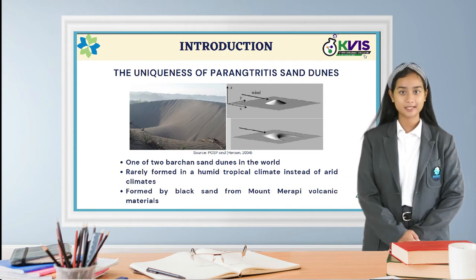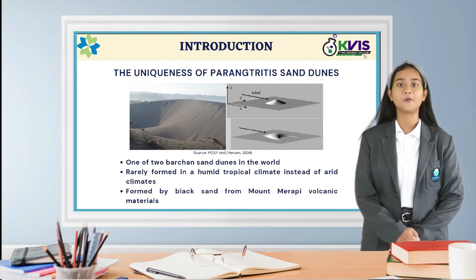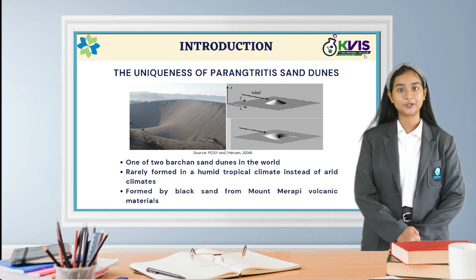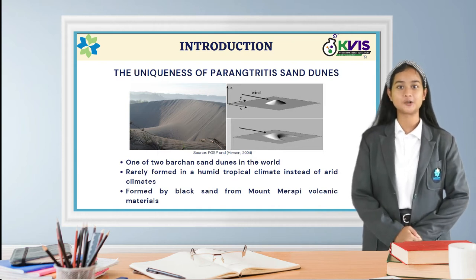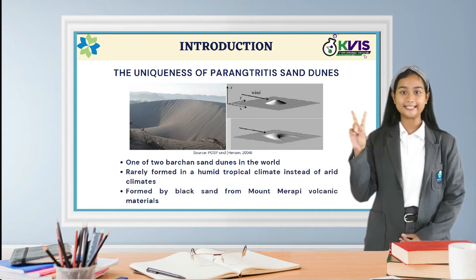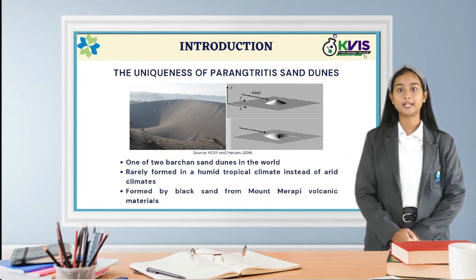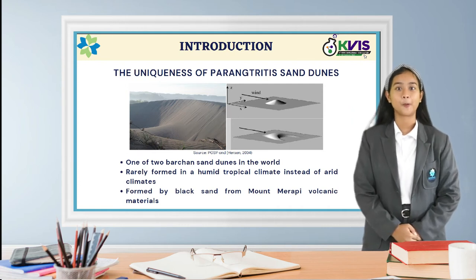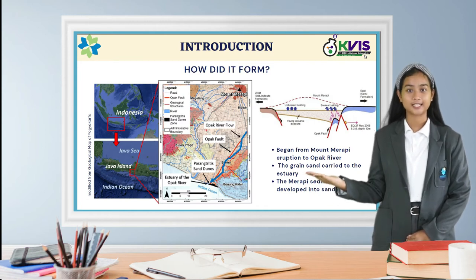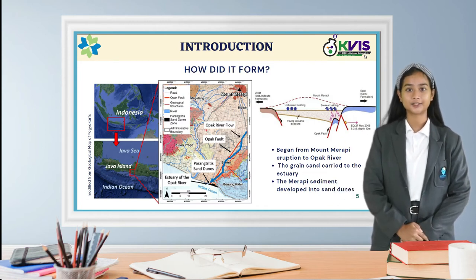In this research, the sand dune in Parangtritis, Yogyakarta, Indonesia was identified. Let us tell you the special things about the parabolic sand dune. First, it is one of two various types of sand dunes in the world. Second, it is rarely formed in a humid tropical climate instead of the usual arid climates. Third, it is formed by black sand from Mount Merapi as the source material. As you can see, the figure depicts the location and landscape formation of the sand dune.